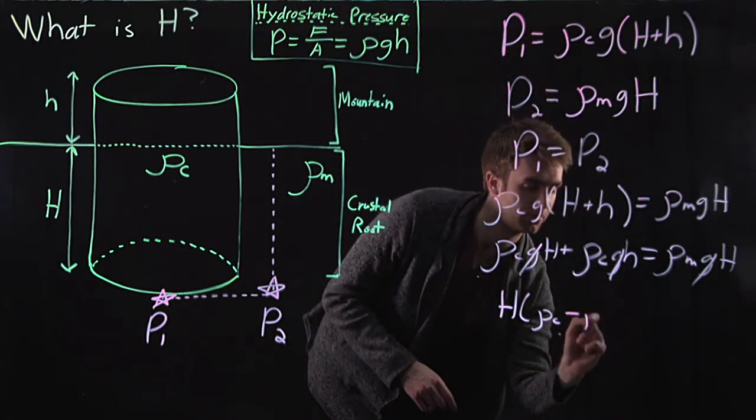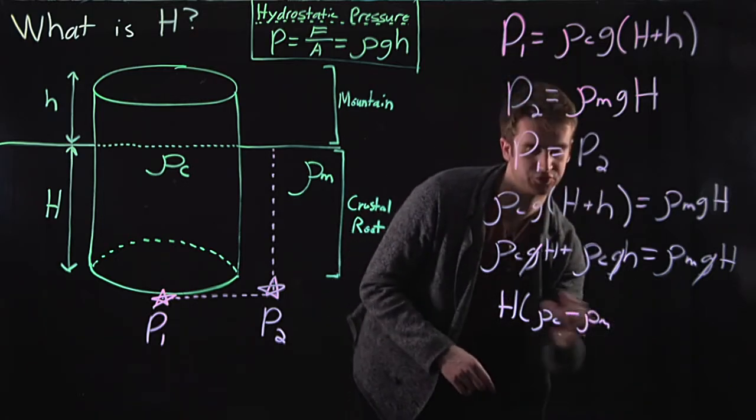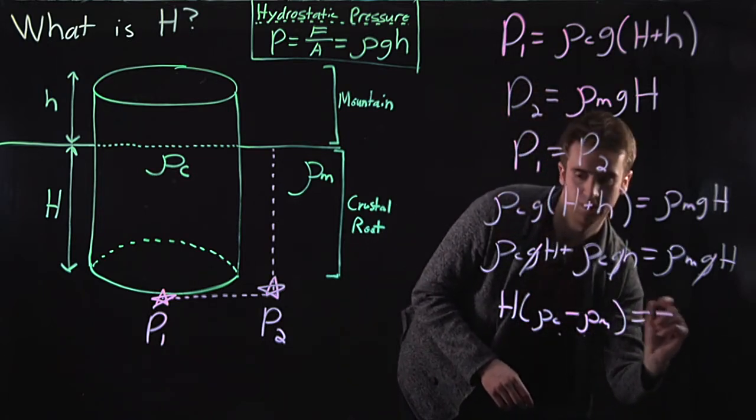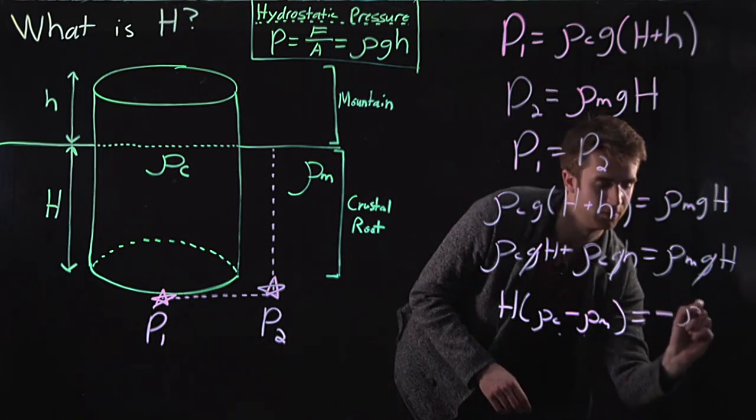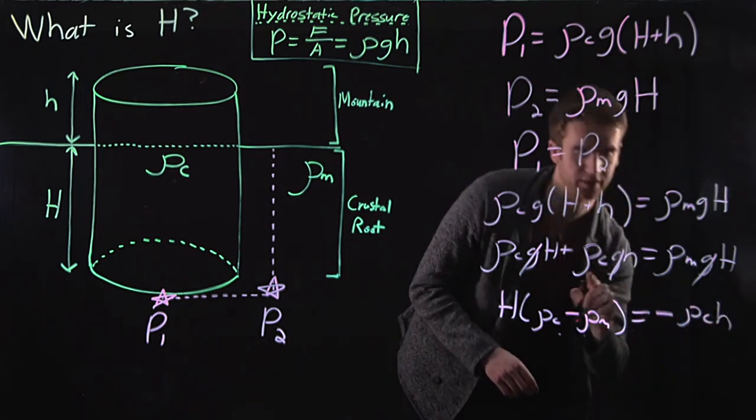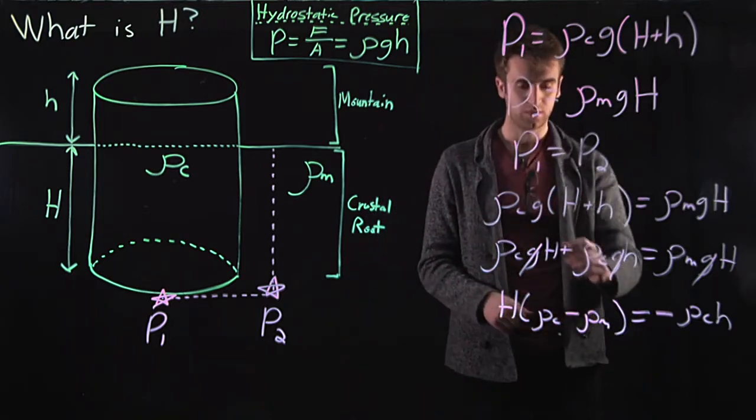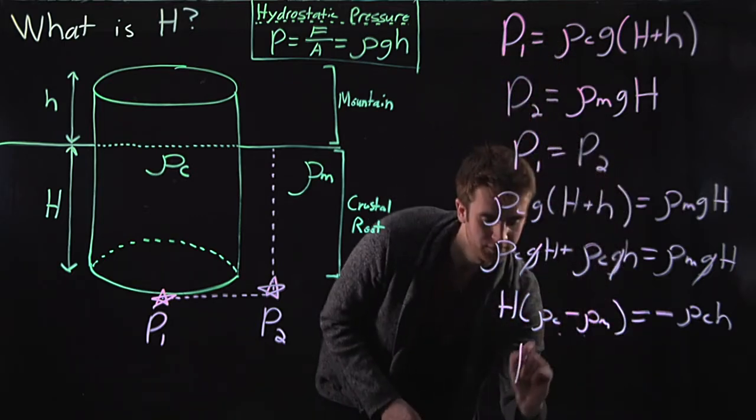So rho c minus rho m. Again, I've just brought this over here. Equals minus rho c h. Again, I've brought this over here to the side of the equal sign. All right. So let's just finish up this equation.